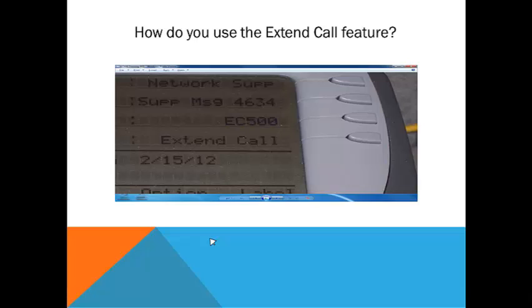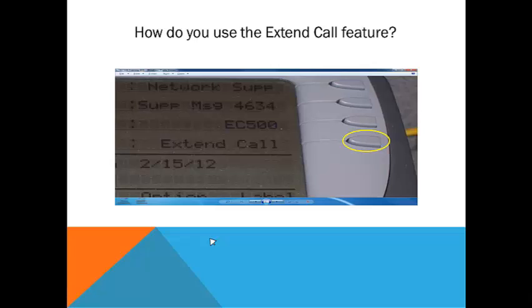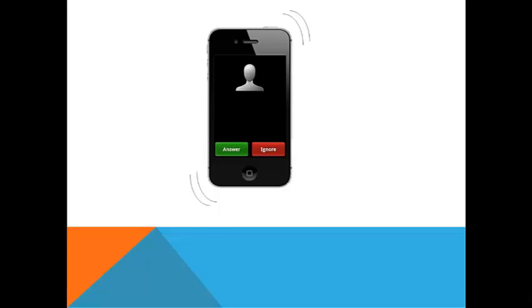So how do you use the Extend Call feature? If you would like to transfer a call from your office phone to your cell phone while on a conversation, press the Extend Call button. Your cell phone will ring. After answering your cell phone, you can hang up on the office phone. The caller will be unaware that the transfer has taken place.